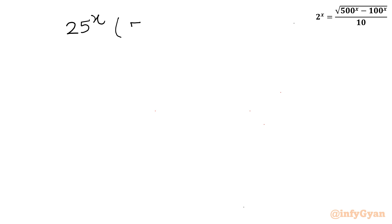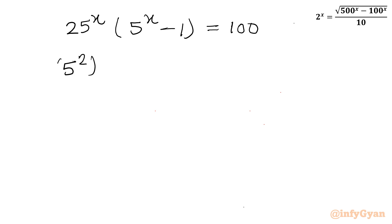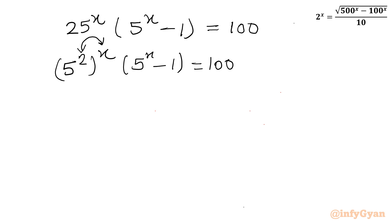Now I will write 25 as 5^2, so it becomes (5^2)^x × (5^x - 1) = 100. Again I can swap these powers using the exponential property, so it will become (5^x)^2 × (5^x - 1) = 100.